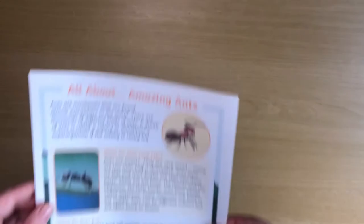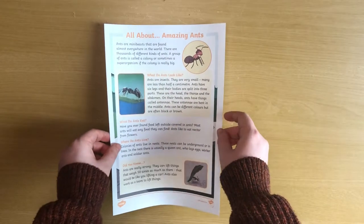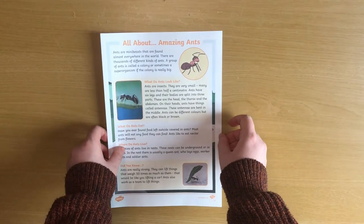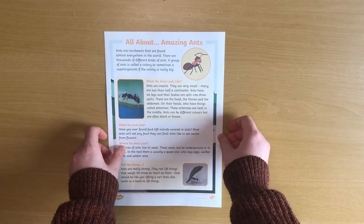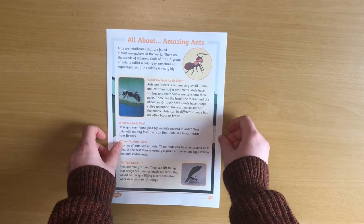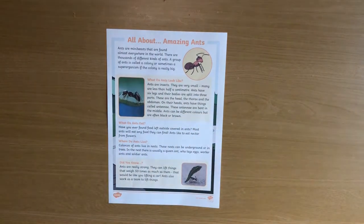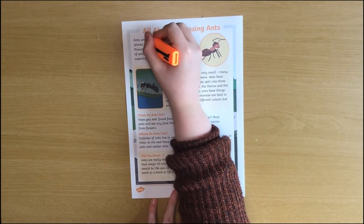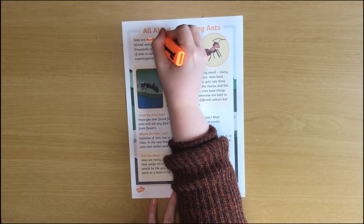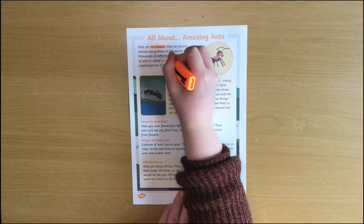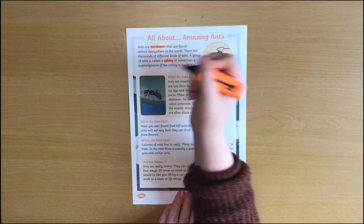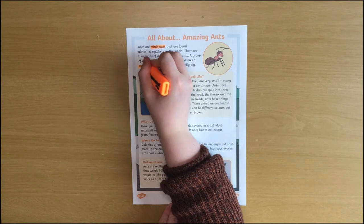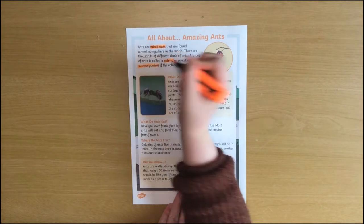A ready-made science fact file is a brilliant way to introduce your child to a new scientific concept. A new science topic often comes with a lot of new words, so this is a great opportunity to expand your child's vocabulary.